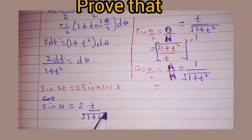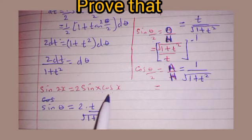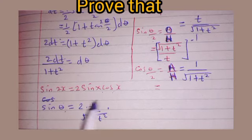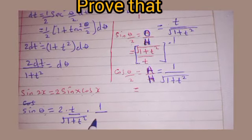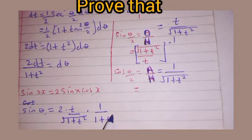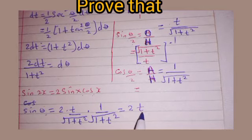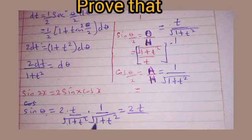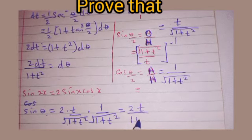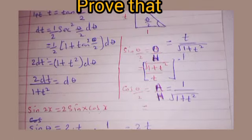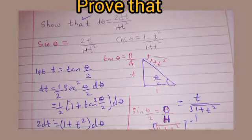Continuing, sin θ = [t/√(1+t²)] × [1/√(1+t²)]. When you multiply square root by square root the square roots cancel, giving sin θ = 2t/(1+t²). We have now proven the second part.